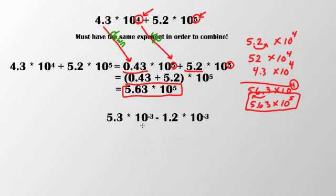I have 5.3 times 10 to the negative 3rd minus 1.2 times 10 to the negative 3rd. In this case, both my exponents are the same, negative 3rd.